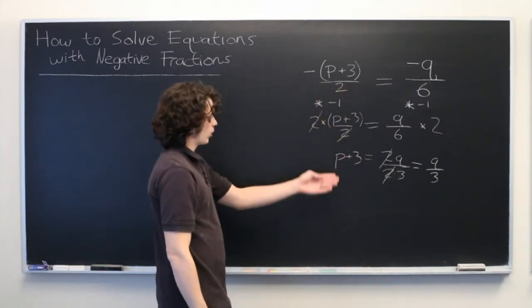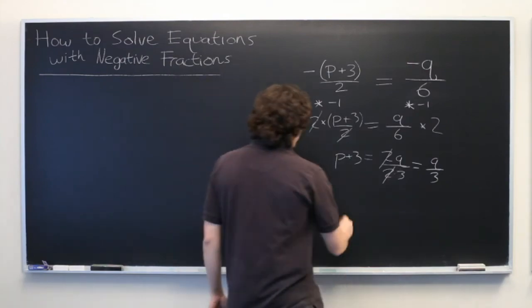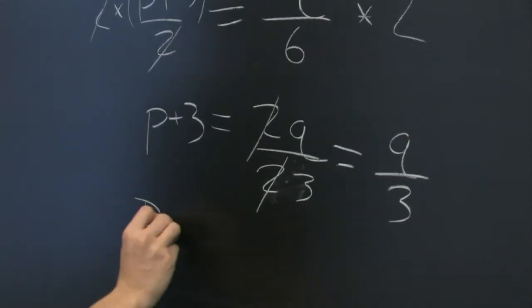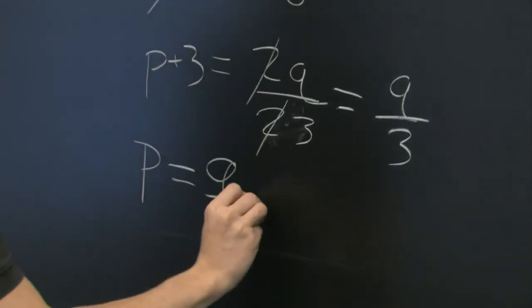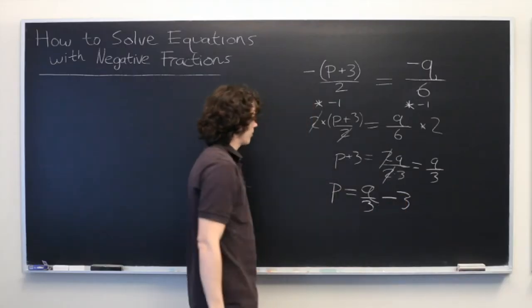Finally, we'll subtract 3 from both sides. And we're left with p equals q over 3 minus 3. And there's our final answer.